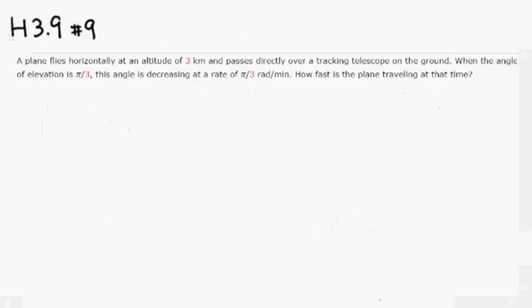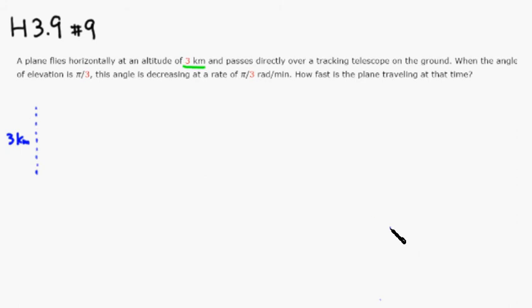Let's draw a picture. It's 3 kilometers above the ground — so the altitude is 3 kilometers. The telescope is directly below on the ground, and the plane starts directly over the tracking telescope.